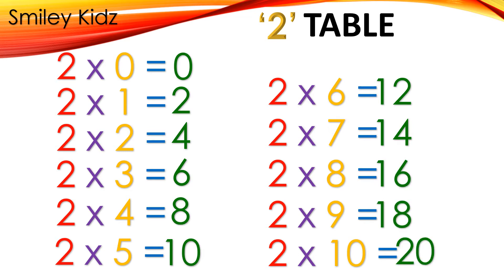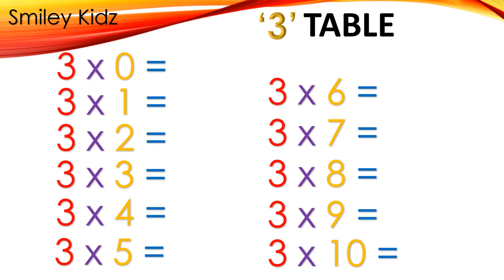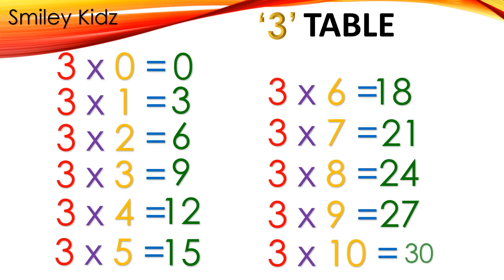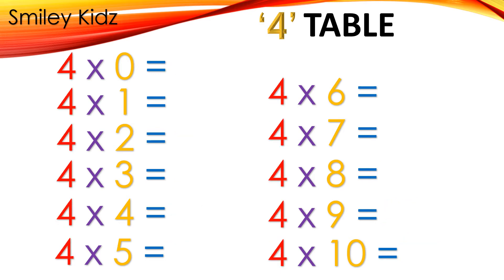Table 3: 3×4=12, 3×5=15, 3×6=18, 3×7=21, 3×8=24, 3×9=27, 3×10=30.